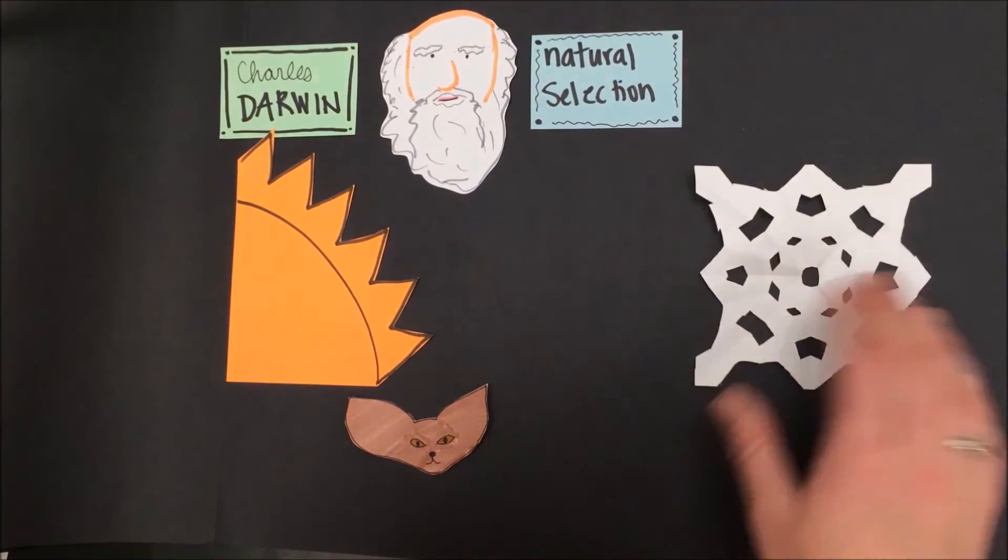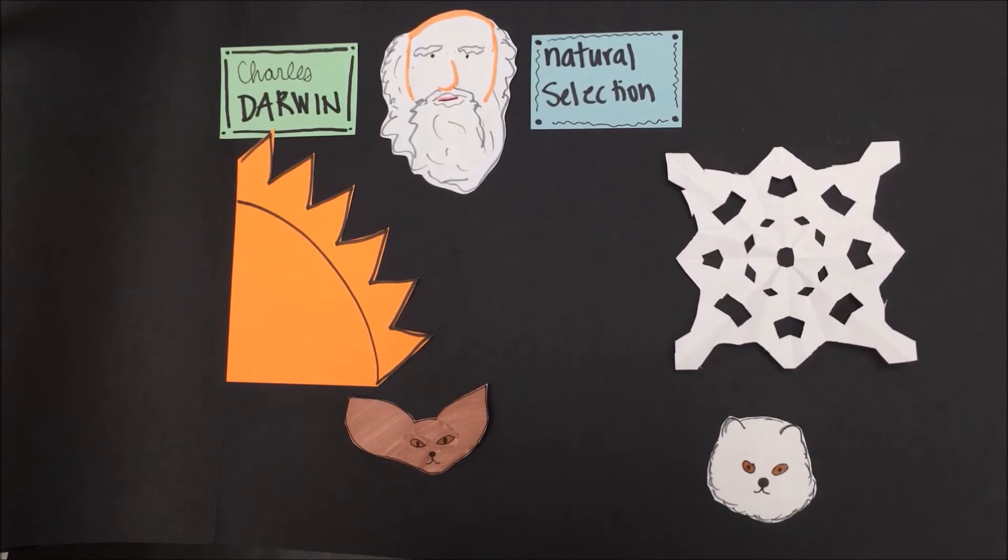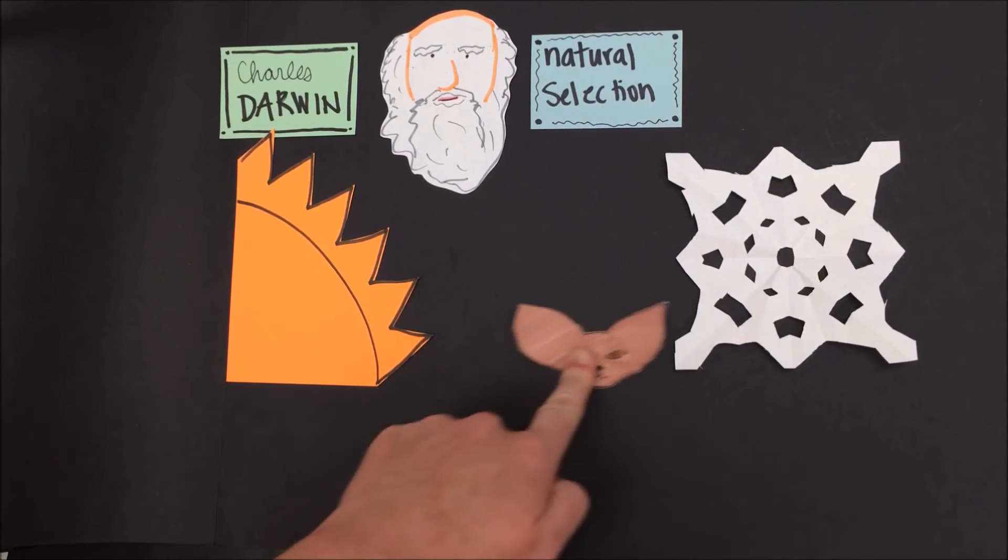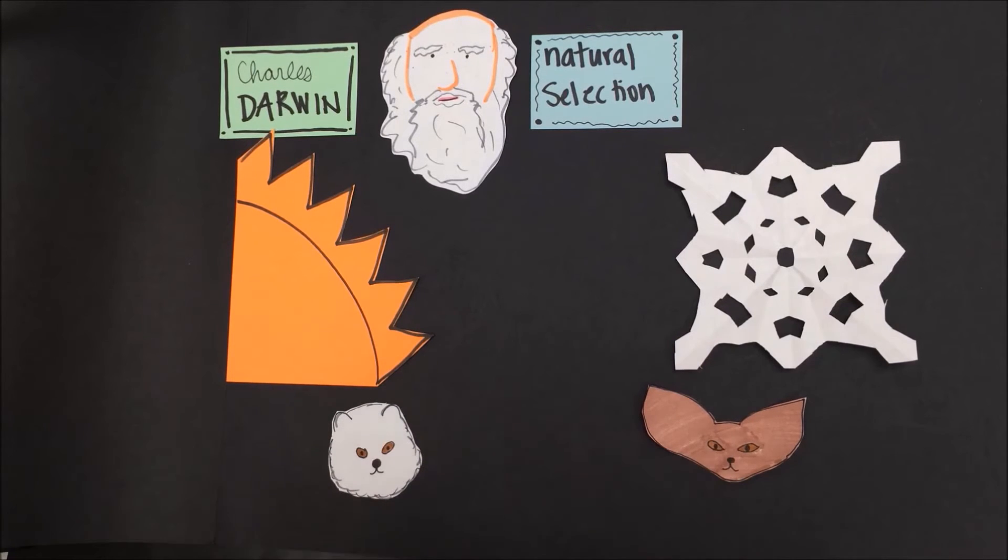Fennec foxes live where it's very hot, and arctic foxes live where it's very cold. They are both best adapted to these environments. Were we to switch their environments, they would both surely die. The arctic fox that is adapted to a cold environment would hold on to too much body heat and die. The fennec fox that's adapted to a hot environment would lose too much body heat and die.